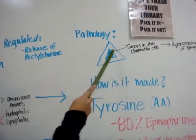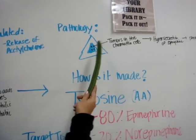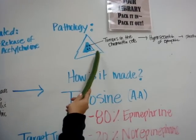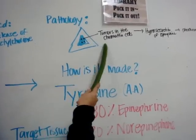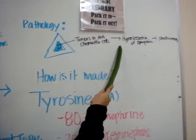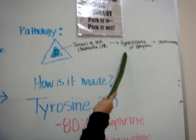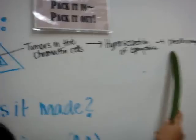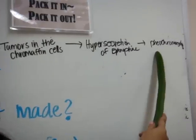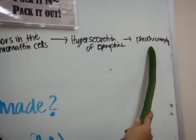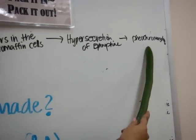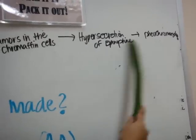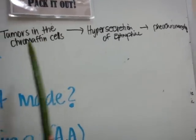For pathology, there are usually tumors in the chromaffin cells, which cause hypersecretion of epinephrine. This causes pheochromocytoma — and that's the pathology.